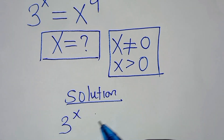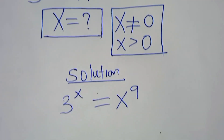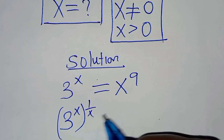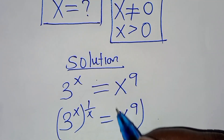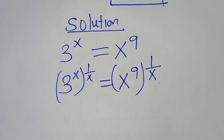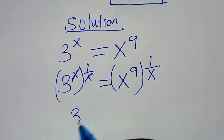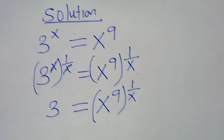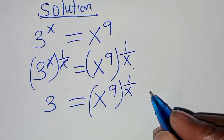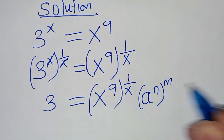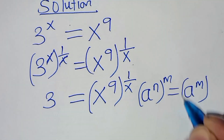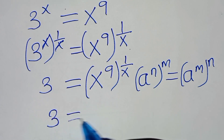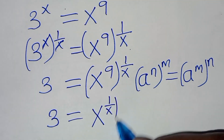We have 3 to the power of x equal to x to the power of 9. The first step is to eliminate this power by multiplying both sides by 1 over x. So we have 3 equal to x to the power of 9 raised to the power of 1 over x. Using the exponent property: a to the power of n raised to power m equals a to the power of m raised to power n, this gives us 3 equal to x to the power of 1 over x, raised to the power of 9.